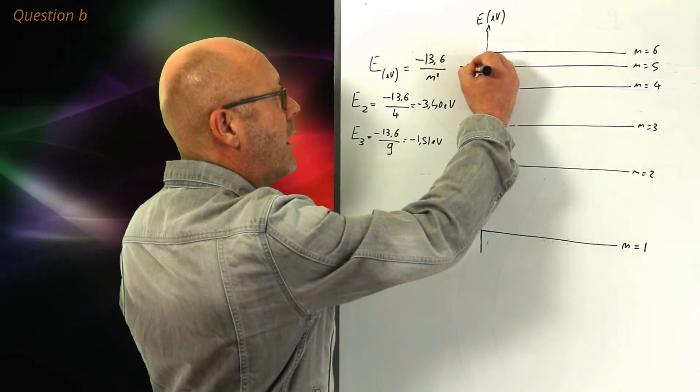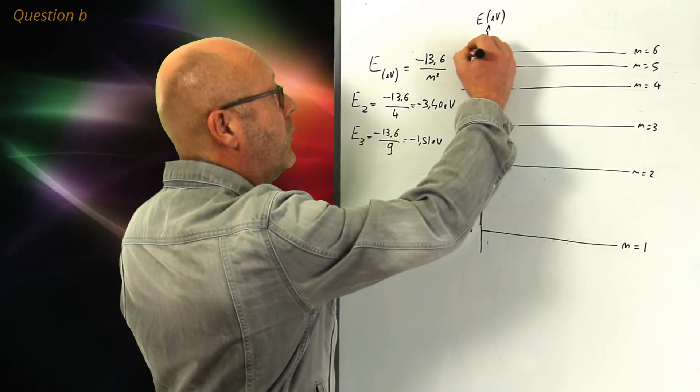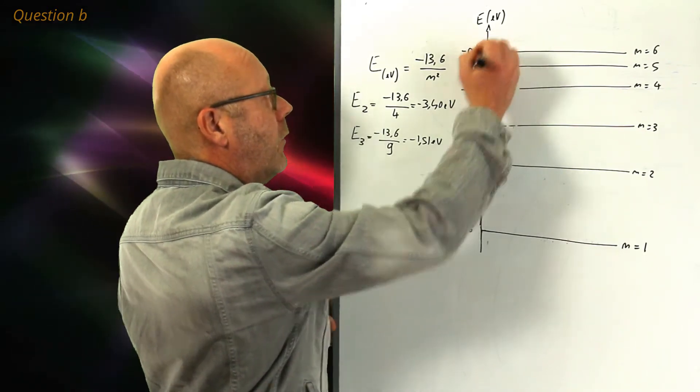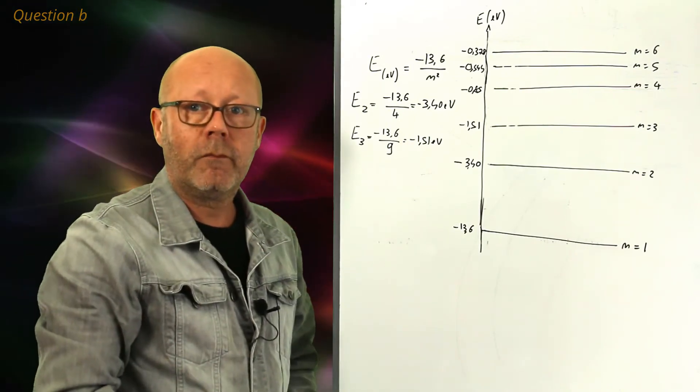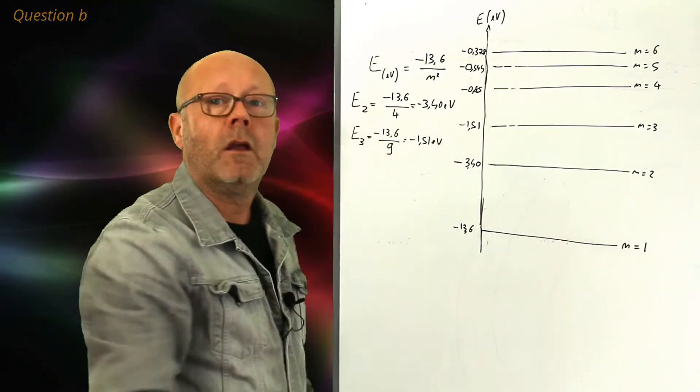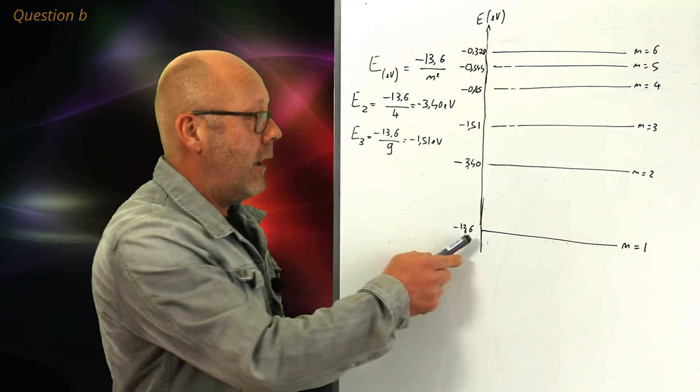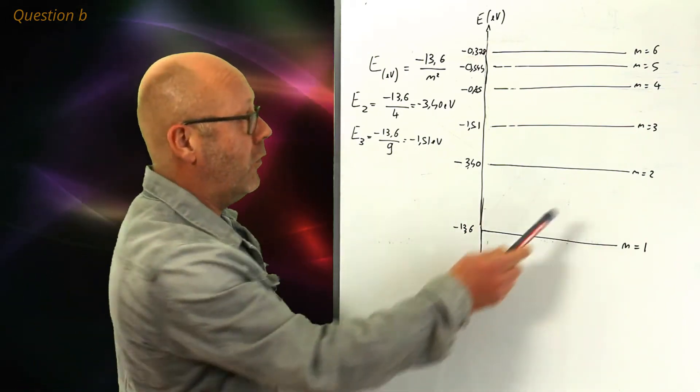This minus 0.544, and this one minus 0.378, all in electron volts. So, here you go. You got now all the energies of the six first levels.